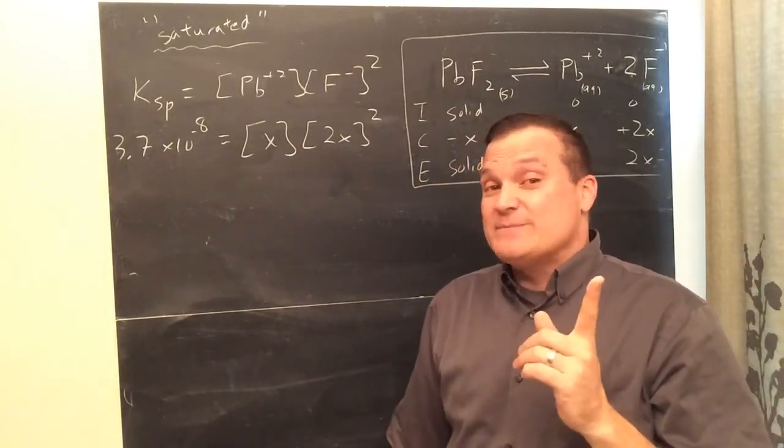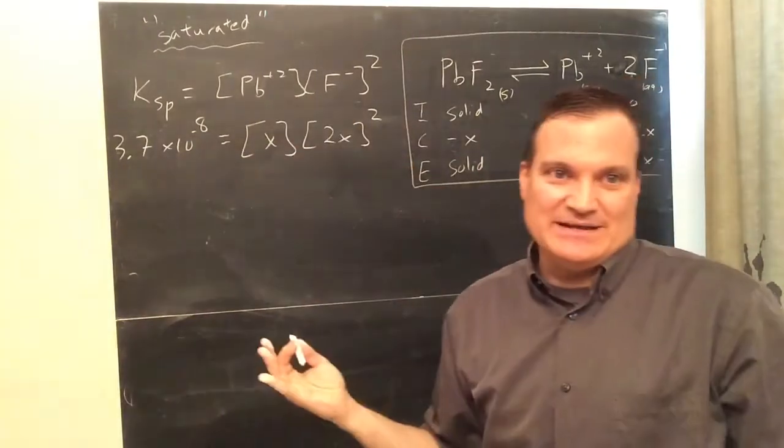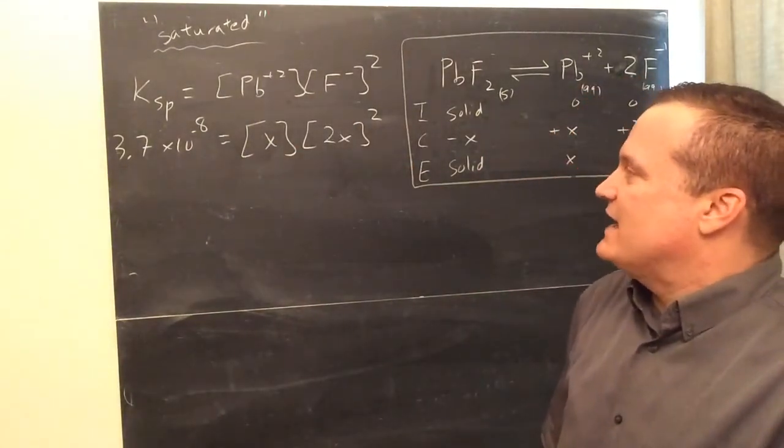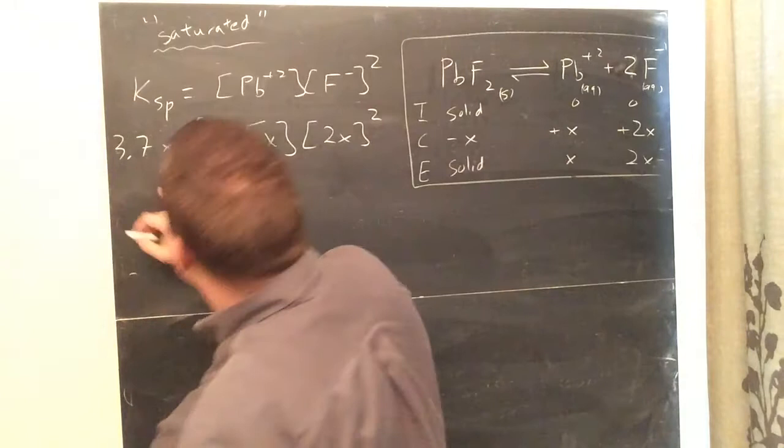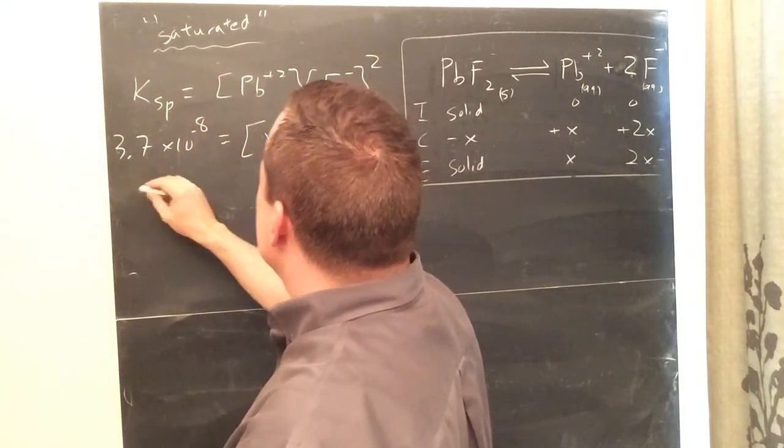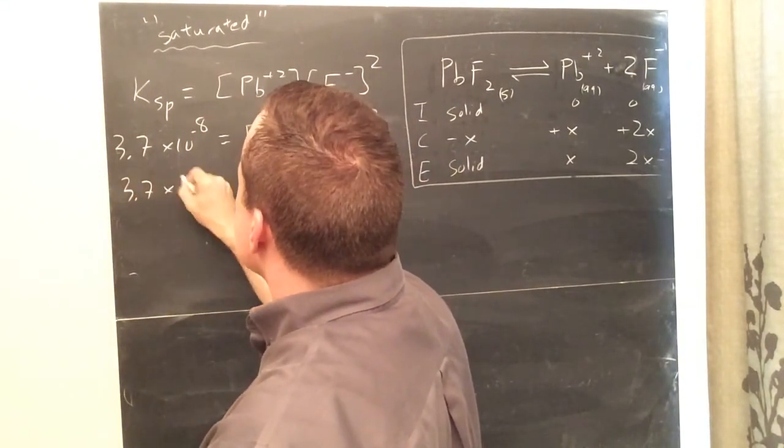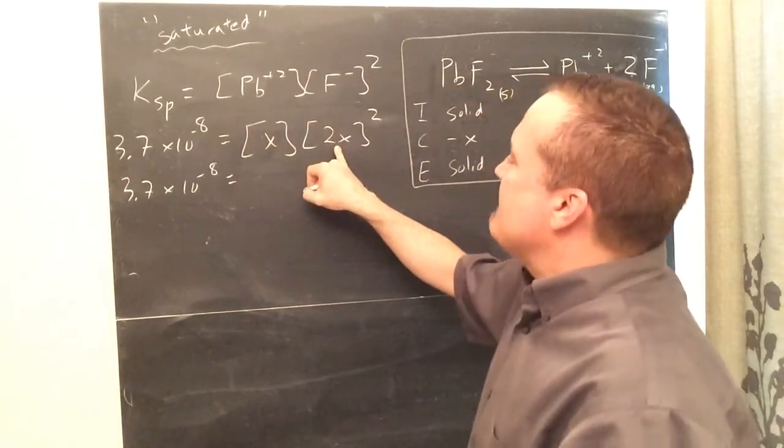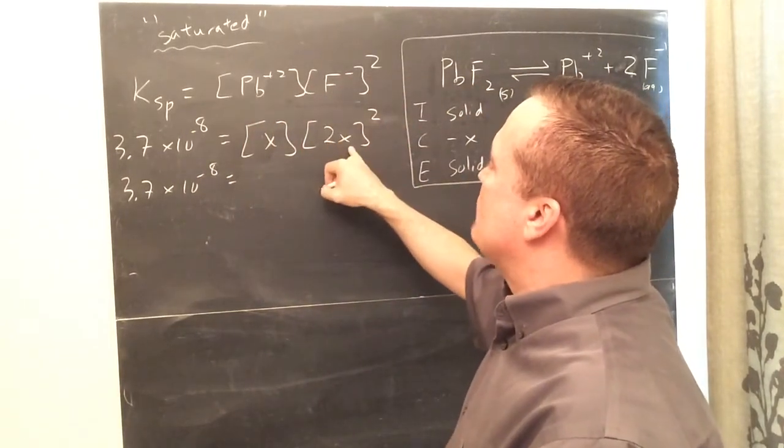So this is where a little bit of the crazier math might come in. But the good news about this math is there's no denominator, so that makes it a little bit easier. Okay, so let's just find X here. So 3.7×10 to the negative 8 equals, now, notice the math.